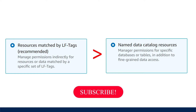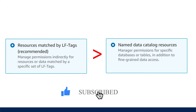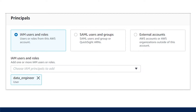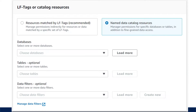When leveraging Lake Formation on AWS, we have two ways to assign and manage permissions to our catalog resources: name-based access and tag-based access. Name-based access is generally how most people are familiar with assigning permissions — you select the principal, which can be an AWS user or a group of users, and assign it access to a specific database or table.